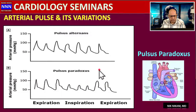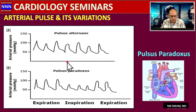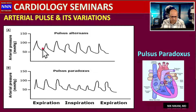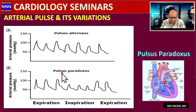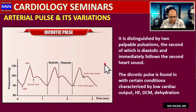Two other important conditions are pulsus alternans and pulsus paradoxus. A separate video on pulsus paradoxus is available on the channel and is especially important for cardiology fellows. Briefly, pulsus alternans is seen in patients with cardiac arrhythmias, while pulsus paradoxus is seen in constrictive pericarditis, large pericardial effusion, restrictive cardiomyopathy, and any condition impairing right ventricular filling.